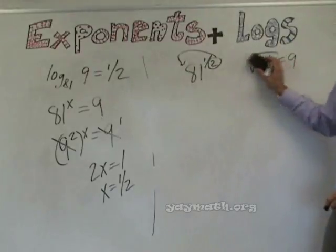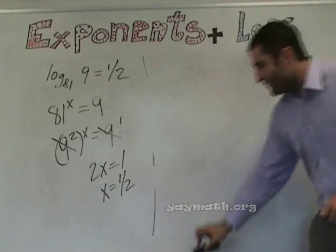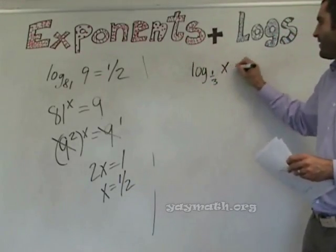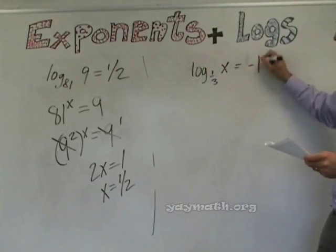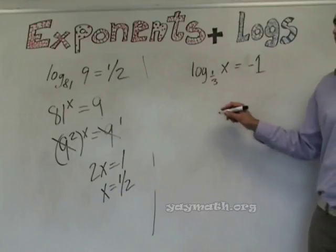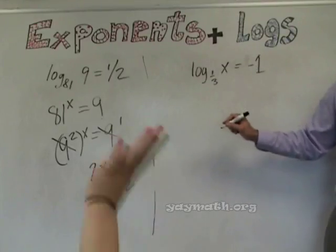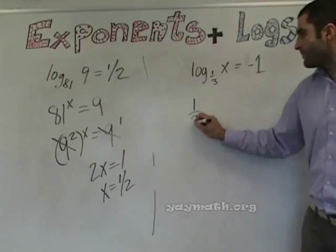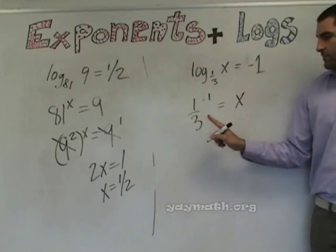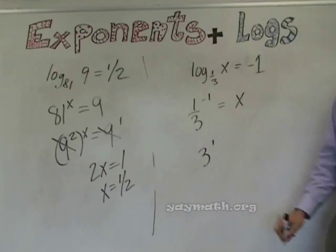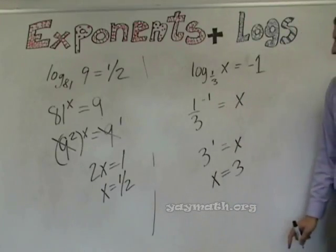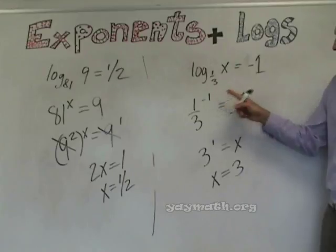Log base one-third of X equals negative one. As an exponent: one-third to the negative one equals X. By the negative exponent rule, one-third to the negative one flips to three to the one, so X equals three.